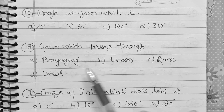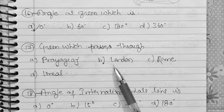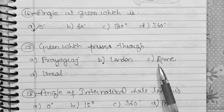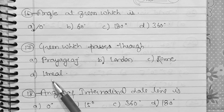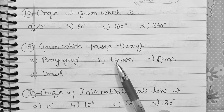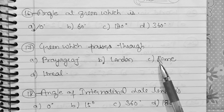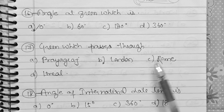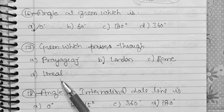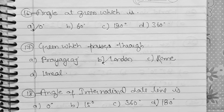Question 17: Greenwich passes through which of the following? Option A: Prayagraj (Allahabad). Option B: London. Option C: Rome. Option D: Israel. The correct answer is option B, London.